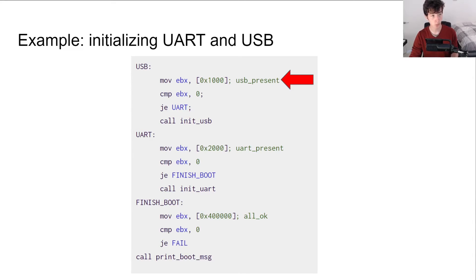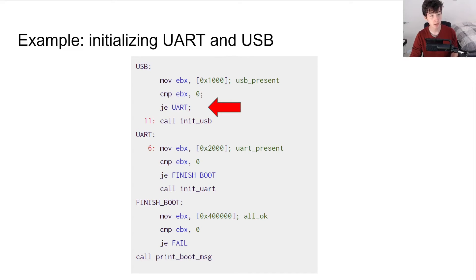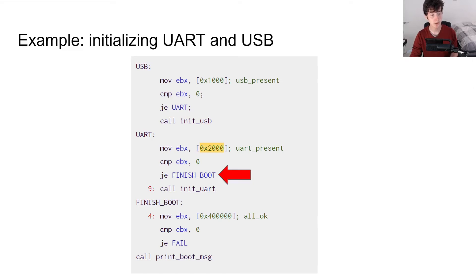JetSet starts at the entry point. First, it reads the USBPresent variable from the device. This variable is made symbolic because it originates in the peripherals. The next instruction compares this value to zero. Then it's time to branch on the USBPresent variable. JetSet checks the distances between the two branch targets and the call to printBootMessage, which are 11 and 16 respectively. Since the call-initUSB path is longer, JetSet decides to try the shorter path that attempts to skip the USB initialization. It goes through a very similar process for the UART device, branching on the UARTPresent variable, and again attempts to skip the initialization.